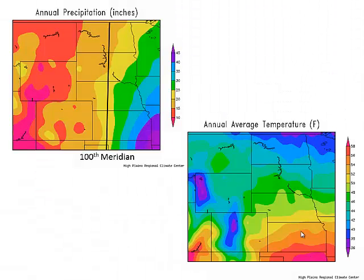Looking at climate averages, the top left map shows annual precipitation for the High Plains region. It's fairly evenly distributed — about every hundred miles we drop about five inches in precipitation on average throughout the year. The black line is the hundredth meridian; west of that you can't grow corn without irrigation, right around that 23 inches of annual precipitation mark. This is the 30-year average — about 20 to 25 inches, give or take, and obviously every year that changes.